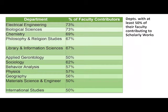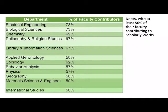Looking at the department level, these are the departments with at least 50% of their faculty contributing to Scholarly Works. You see STEM at the top, followed closely by Philosophy and Religion, then Library and Information Studies, and some social sciences scattered around. You do see the big players — Biology and Chemistry — but it is interesting to see other fields higher up that we may not have initially considered to be strong advocates of open access.